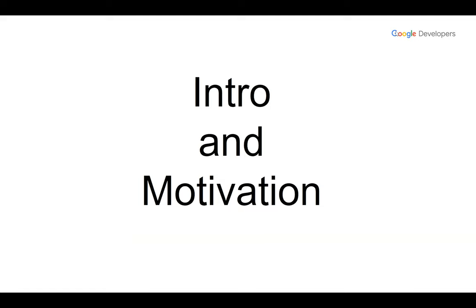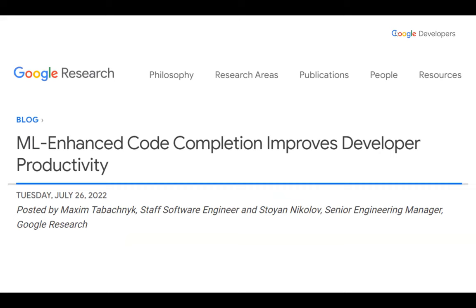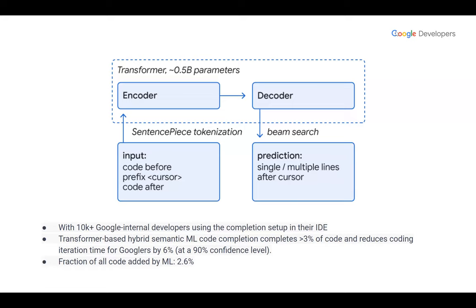Is this real or just a toy for academia? I would argue it is a real thing — it's currently being used in industry. There is a blog post by Google in 2022 talking about an internal tool. It's a hybrid system with 0.5 billion parameters, and according to that blog post, about 3% of code currently being pushed to Google's code base is actually ML-generated.